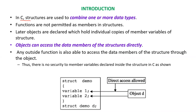In C structures, functions cannot be used. But objects have been declared so that they can hold individual copies of the member variables of a structure. At the same time, it can access the data members of the structure directly. Any outside function is also able to access the data members of the structure through this particular object, since there is no security mechanism applied in C structures.